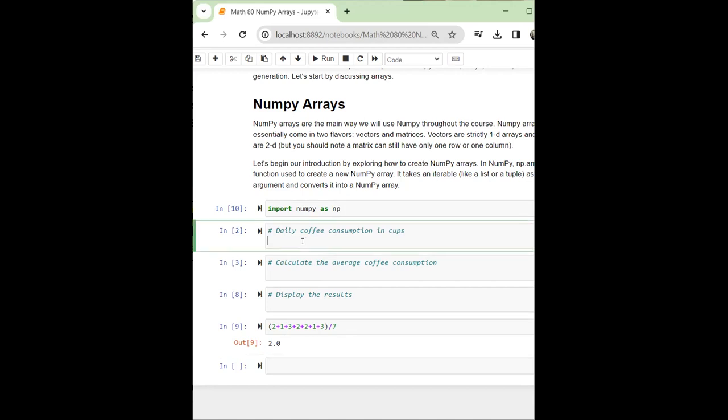Then we're going to create a variable which takes the number of cups of coffee and assign it to a variable called coffee_consumption, which is np.array, and I'm going to open and close parenthesis, and then I'm going to pass in my list with all of these numbers: 2 comma 1, comma 3, comma 2, comma 2, comma 1, and comma 3.